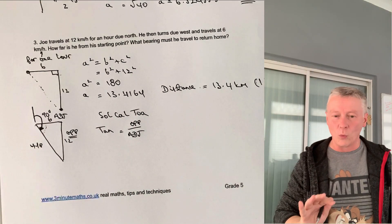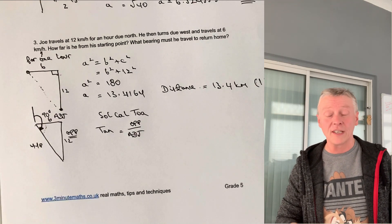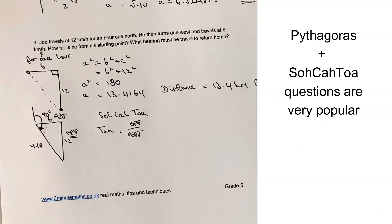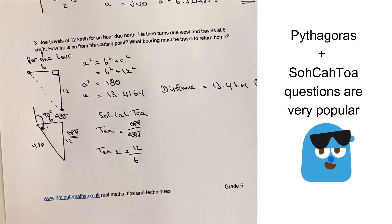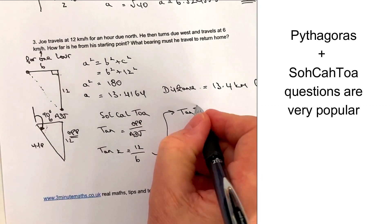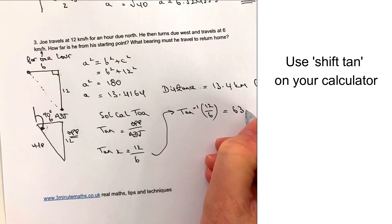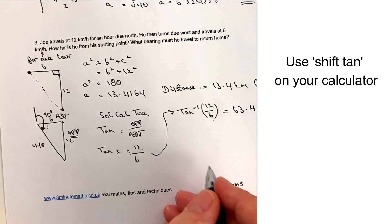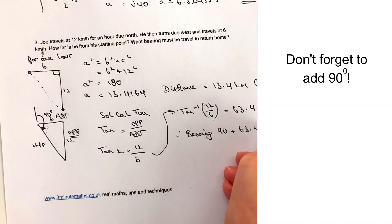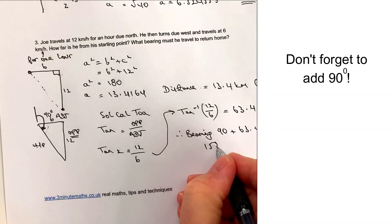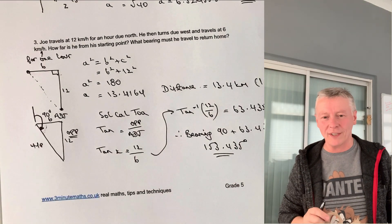So tan of x equals the opposite (12) over the adjacent (6). Using the inverse tan on my calculator, I get 63.435 degrees. These questions are knocking on the door of grade 5, so don't worry if you find them challenging. Therefore, the bearing is going to be 90 plus 63.435, which equals 153.435 degrees. That's the answer to that particular question.